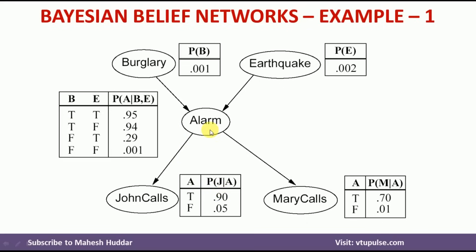The probability of John calling depends on alarm. Probability that John calls given alarm is 0.90, and probability that John calls given no alarm is 0.05. The complementary probabilities are: probability that John does not call given alarm is 1 minus 0.90, which equals 0.1, and probability that John will not call given no alarm is 1 minus 0.05, which equals 0.95.